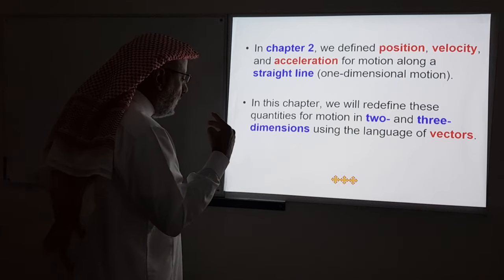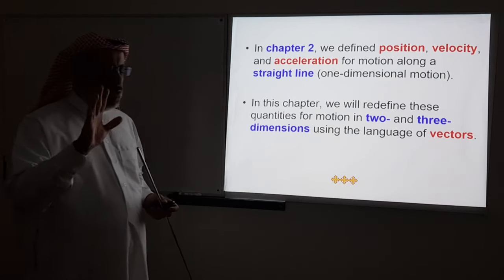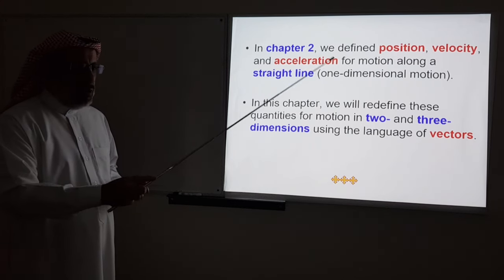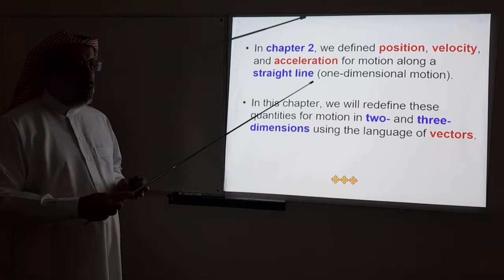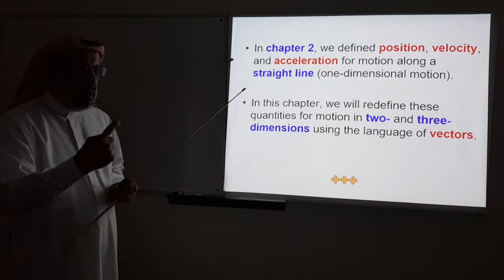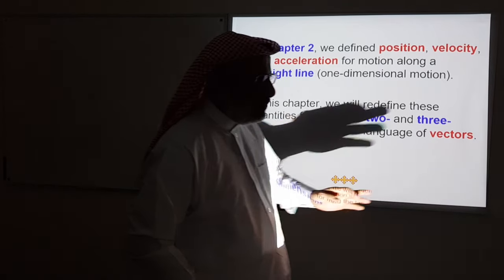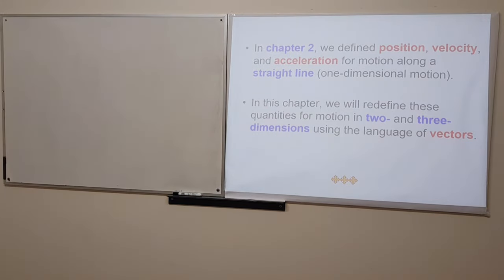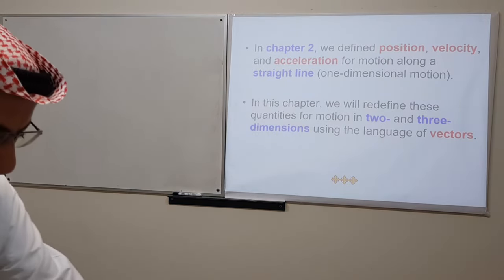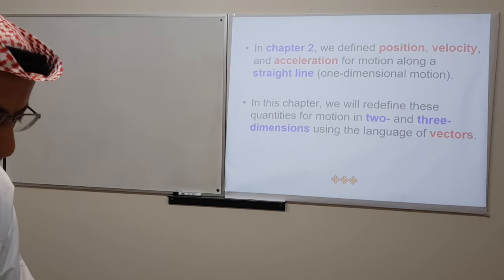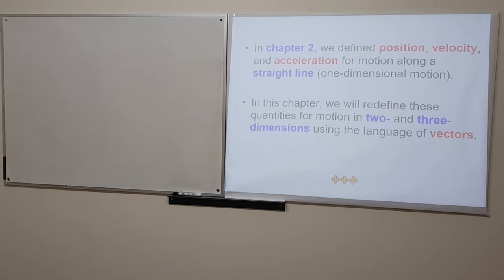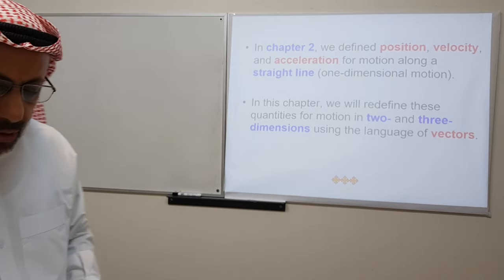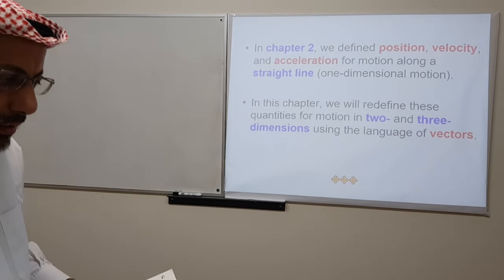In the coming two lectures in chapter four, we will have applications of these. First, we will apply them to projectile motion, then to circular motion, and then to relative motion. Let's go through the equations for motion in two and three dimensions. We will start with position, then move to velocity, then acceleration, and define them in a way similar to what we did in chapter two for one-dimensional motion.